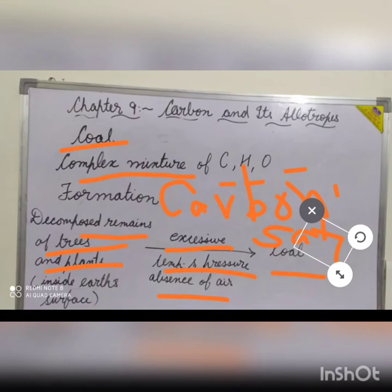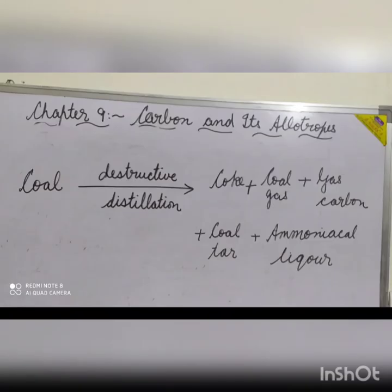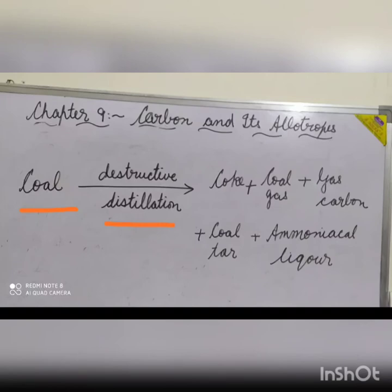Carbonization can be defined as a slow chemical process of the conversion of wood or trees into coal. In laboratories, the process of destructive distillation is carried out to obtain different products from coal, such as coke and gas carbon. The destructive distillation of coal takes place when coal is heated in the absence of air, resulting in the formation of gas carbon, coal tar and ammoniacal liquor.